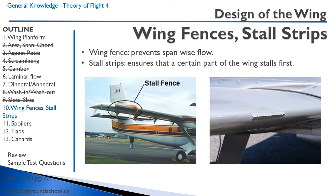A stall fence prevents span-wise flow — you can see one pictured on a Twin Otter. A stall strip is used instead of washout to make the wing root stall first before the wingtip. It just disturbs the airflow slightly at high angles of attack, making that part of the wing root stall first so we still have controllability on the ailerons.